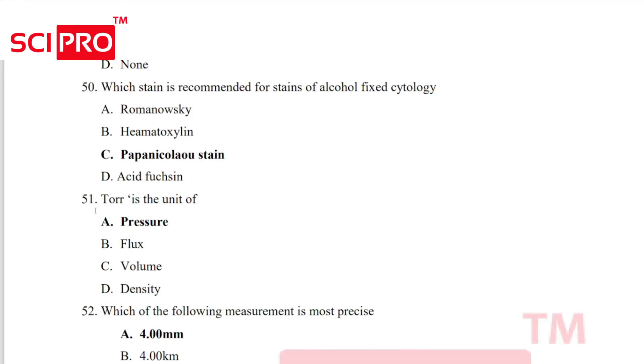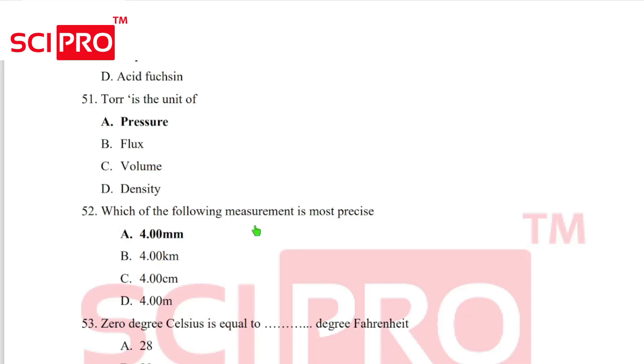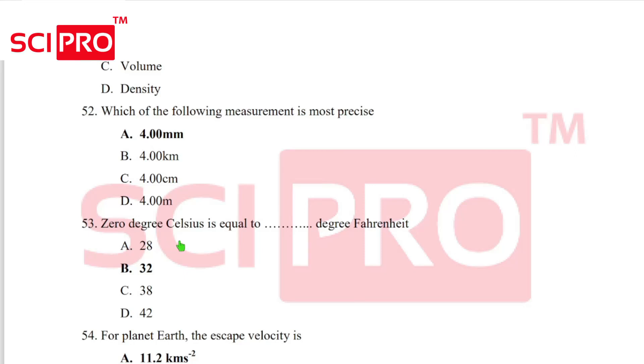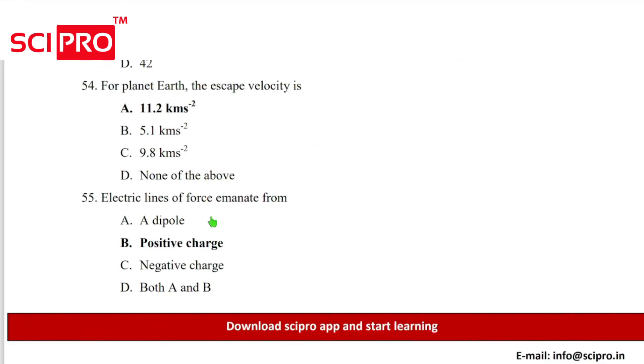Question number 51, torr is the unit of pressure. Question number 52, which of the following measurement is most precise? Answer A. Question 53, 0 degree Celsius is equal to 32 degree Fahrenheit. Question 54, for planet Earth, the escape velocity is 11.2 km per second. Question number 55, electric lines of force emanate from positive charge.